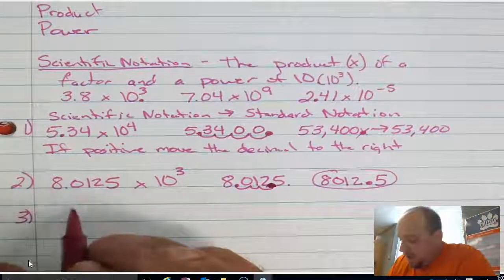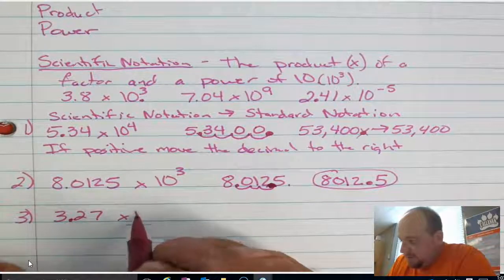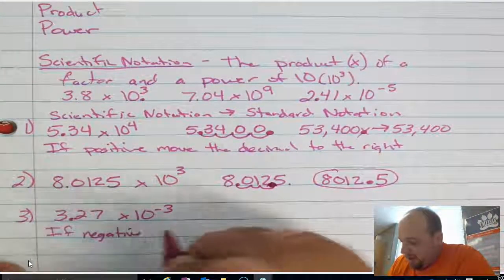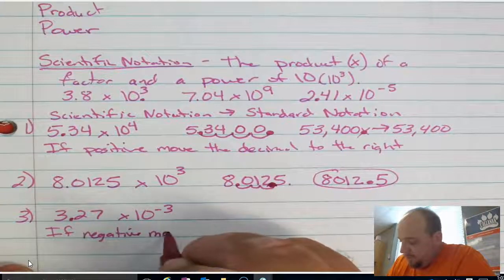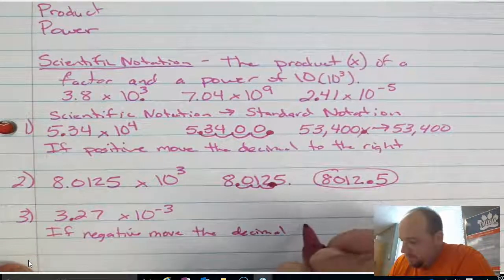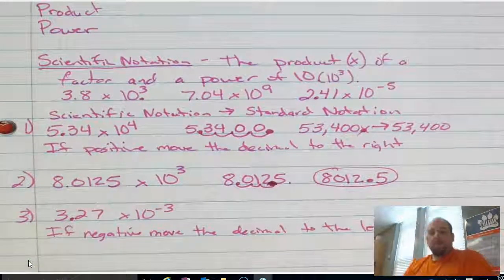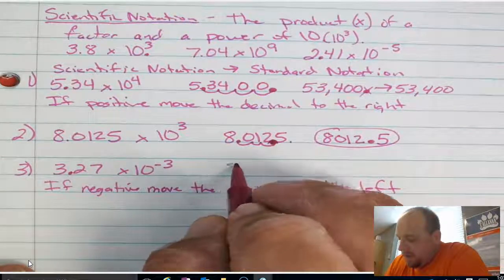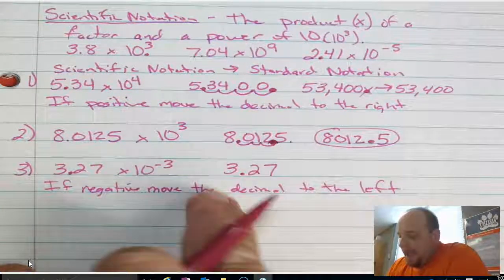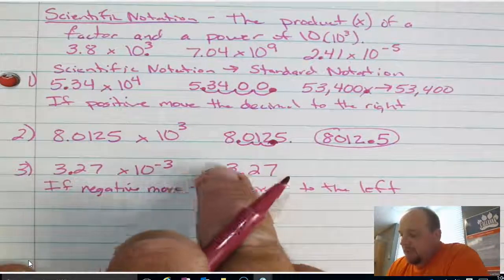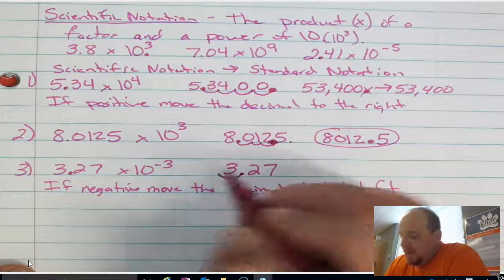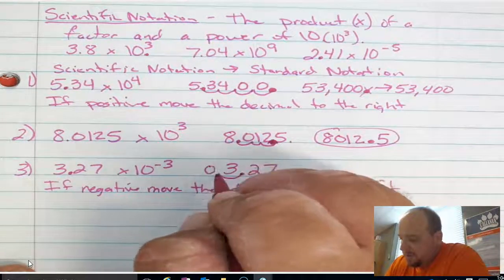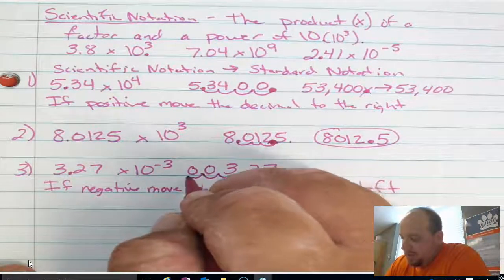Let's do a couple with negatives. 3.27 times 10 to the negative 3. If we have a negative exponent, we move the decimal to the left — the opposite of positive. So I rewrite 3.27, and instead of moving to the right, I move to the left. I move once to the left and run out of digits, so I insert a zero to move a second time, then another zero to move a third time.